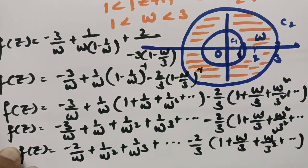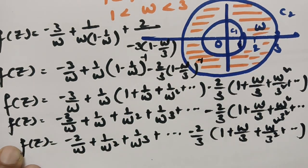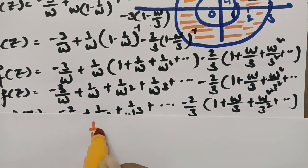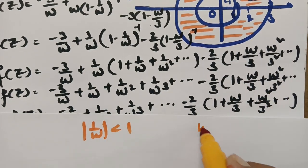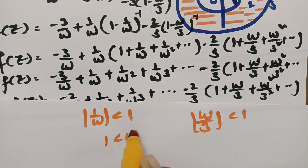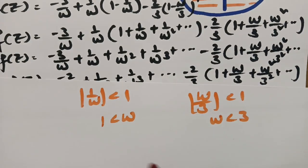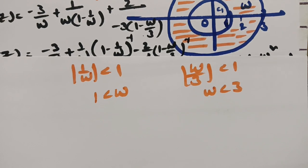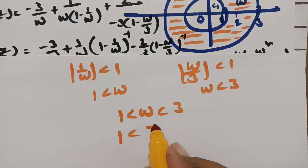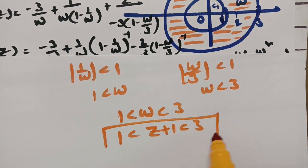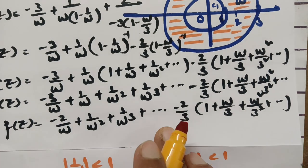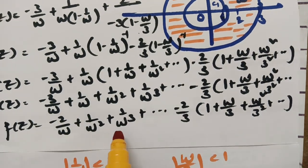The region of convergence is confirmed: |1/w| < 1 gives |w| > 1, and |w/3| < 1 gives |w| < 3, so combining: 1 < |w| < 3, which is 1 < |z+1| < 3, matching the given region.